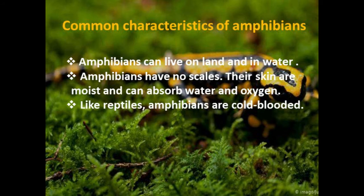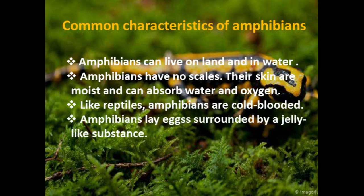Like reptiles, amphibians are also cold-blooded. Their body temperature depends on their surroundings, just as teacher explained in the previous slide. And the next characteristic: amphibians lay eggs surrounded by a jelly-like substance. This is also unique — amphibian eggs are not covered by a hard shell like other animals, but look like jelly — small round jelly blobs.